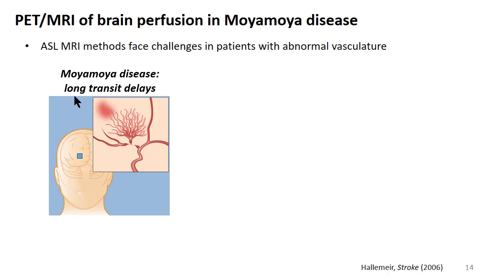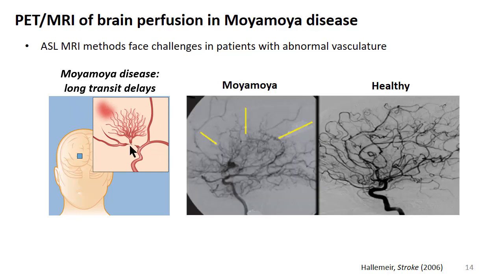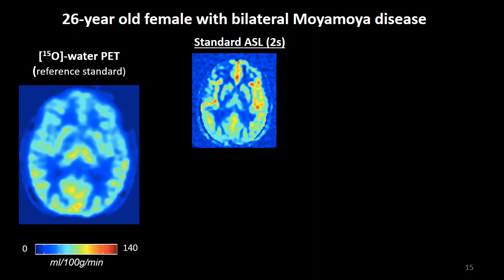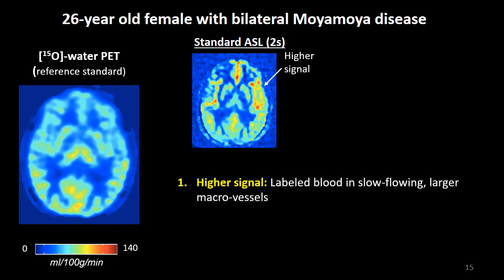Moyamoya patients have very long arterial transit delays. Because the arteries at the base of the brain become blocked, they develop collateral pathways that elongate arterial transit time and make ASL very challenging. For instance, in a young female patient with bilateral disease, scanning with standard consensus ASL parameters might produce a heterogeneous image that's hard to interpret — until you have a simultaneously acquired PET image. Here the PET reference shows a much more uniform CBF along the cortex.